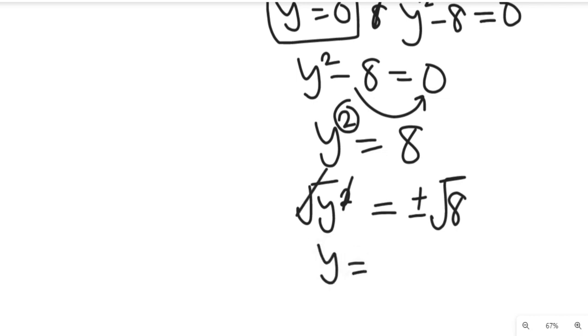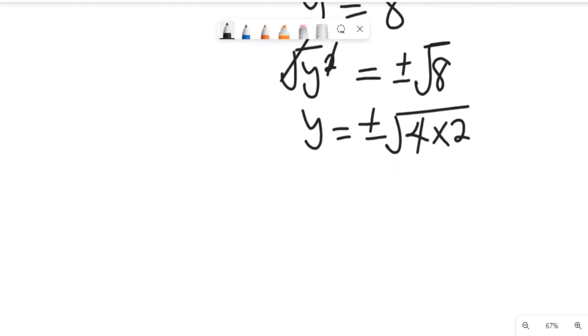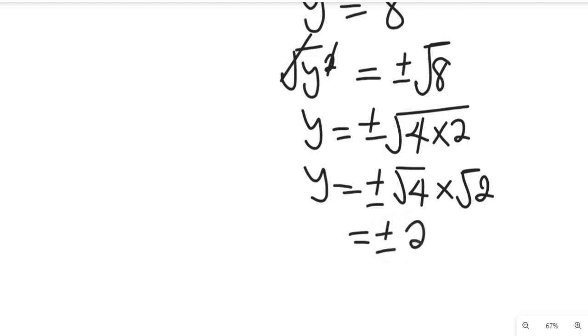And then we'll have our y to be equal to plus or minus, this square root will become 4 times 2, because 4 times 2 equals 8. And what will that solution give us? Our y, according to surds, will give us plus or minus square root of 4 multiplied by square root of 2. So this will be equal to plus or minus 2√2.